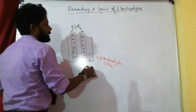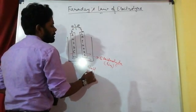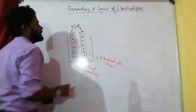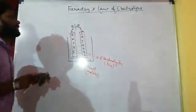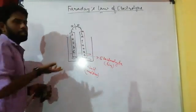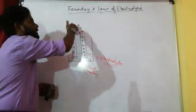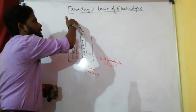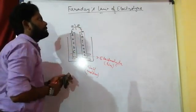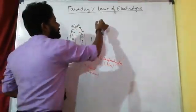The electrodes are placed inside the electrolyte, and the electrolyte must be in the liquid phase. For this example, we are taking molten NaCl. This whole container holds the electrolyte, and the battery supplies electrical energy, which is converted to chemical energy.